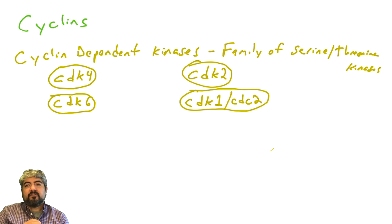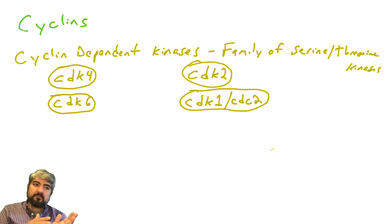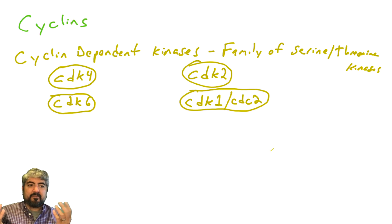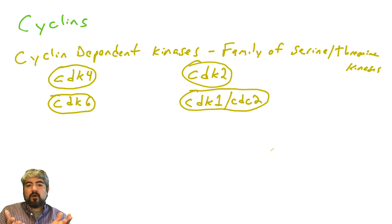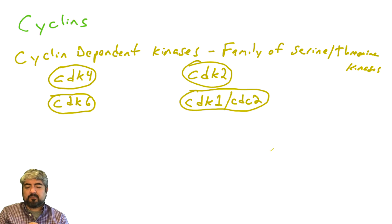As we've seen in other videos, sometimes proteins have different names — the same protein named by one group of researchers, another name by another group, and both names stick. For example, CDK1 is often referred to as CDK2. Again, same protein, just two names for that same protein.